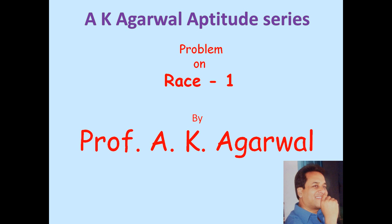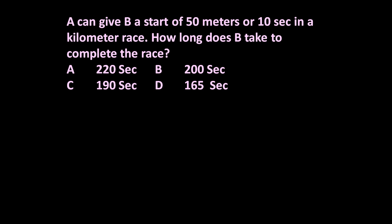Hello friends and welcome to A K Agarwal aptitude series. In this session, we are going to learn a technique for solving a problem on race. Here the given problem is: A can give B a start of 50 meters or 10 seconds in a kilometer race.